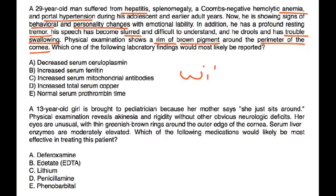Physical exam shows a rim of brown pigment around the perimeter of the cornea. Which of the following lab findings would most likely be reported? This is describing a patient with Wilson disease. The copper-carrying protein ceruloplasmin is deficient in its synthesis because there is liver disease — the liver is where it is normally synthesized — so its levels will be low. That is choice A.